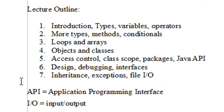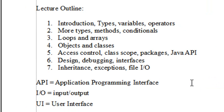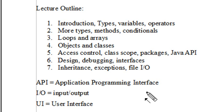Just a few acronyms to keep in mind: API means Application Programming Interface, IO stands for Input-Output, and UI — my favorite — stands for User Interface.